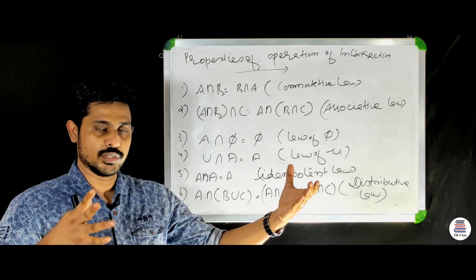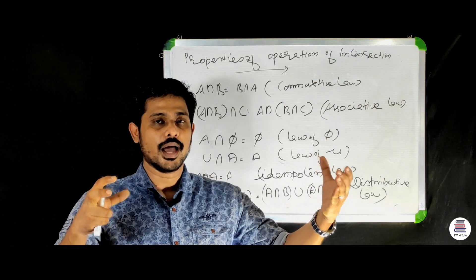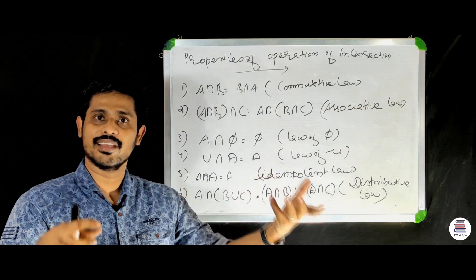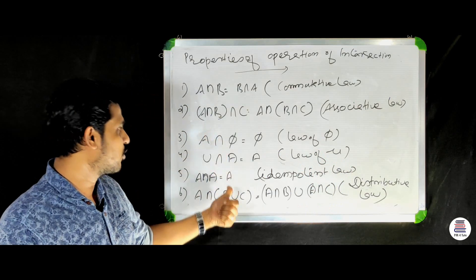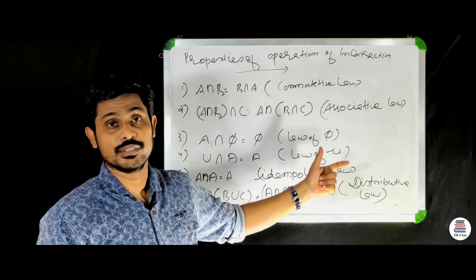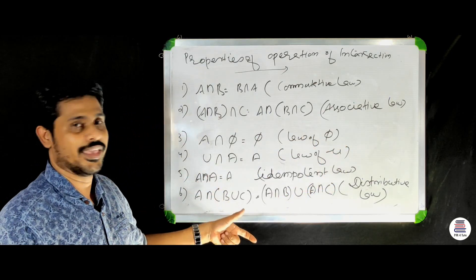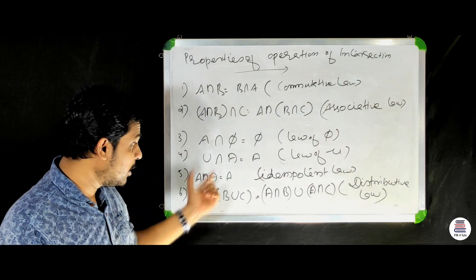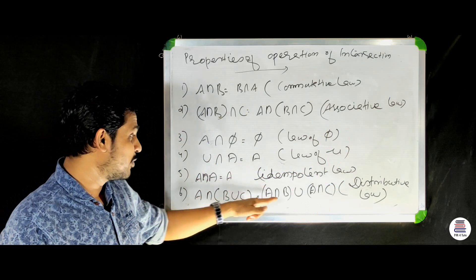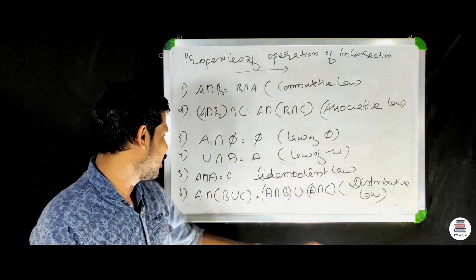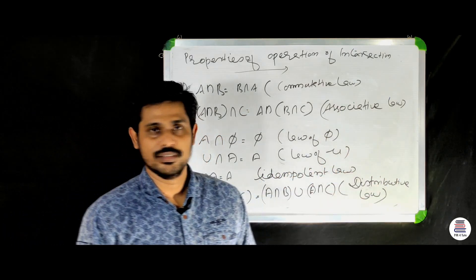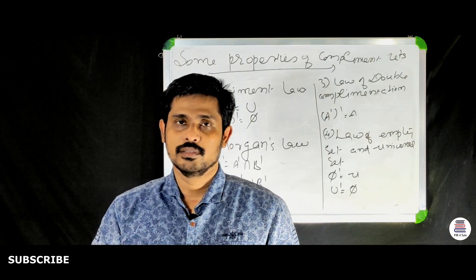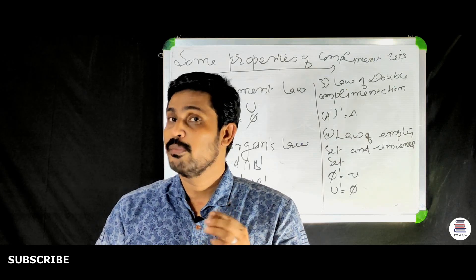If there are members in a class who are in many different football teams with no common element, the result is the null set. The universal set intersection A equals A — law of universal set. Also, A intersection A equals A. And the distributive law: A intersection (B union C) equals (A intersection B) union (A intersection C).